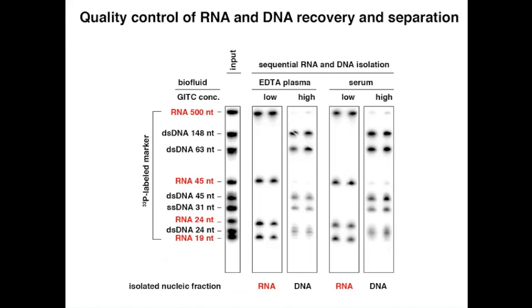The next slide is just a quality control. If your spike is radioactive — in this case DNA restriction fragments, synthetic single-strand DNA, as well as synthetic radio-labeled RNAs, as well as an in vitro transcript of 500 nucleotides in length — the red things are the RNA. You can see that as you carry this through an isolation protocol, the RNA is nicely separated from the DNA. The DNA contains a tiny hint of RNA, which you don't really need to remove because you're never reverse transcribing this RNA in the DNA fraction when you prepare for DNA sequencing.